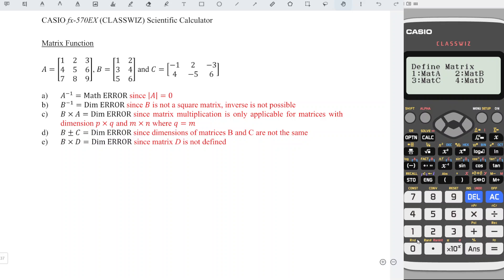We have matrix A, so we choose 1. We have 3 rows and 3 columns. Enter the value accordingly: 1, 2, 3, 4, 5, 6, 7, 8, 9. Done.